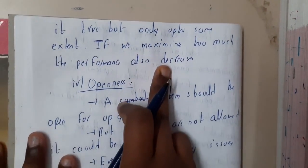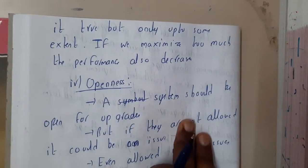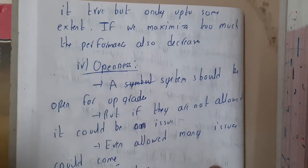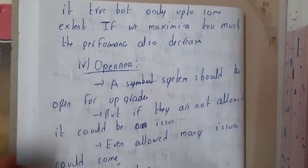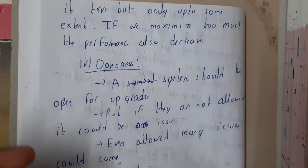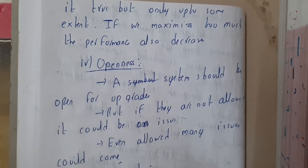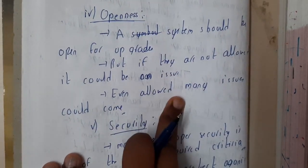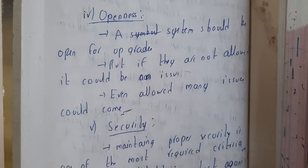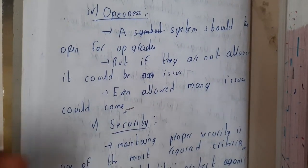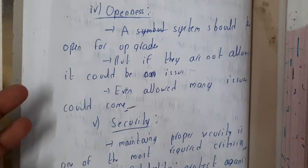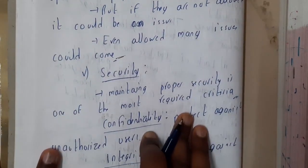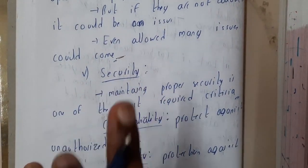Maximizing resource use is also an issue. Similarly, openness — a system should be open to upgrades. Assume you want to increase your RAM, storage, or change from HDD to SSD. In those situations, you need to be open. Even though processors generally allow upgrades, sometimes you can face issues due to certain processors and related components.